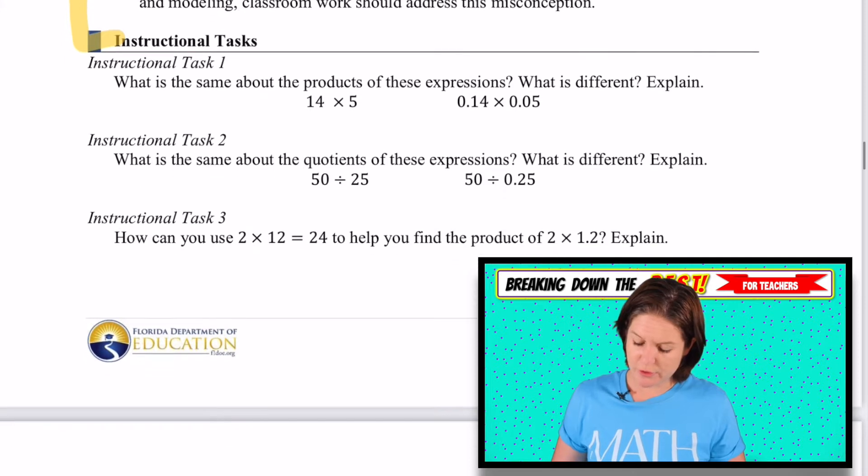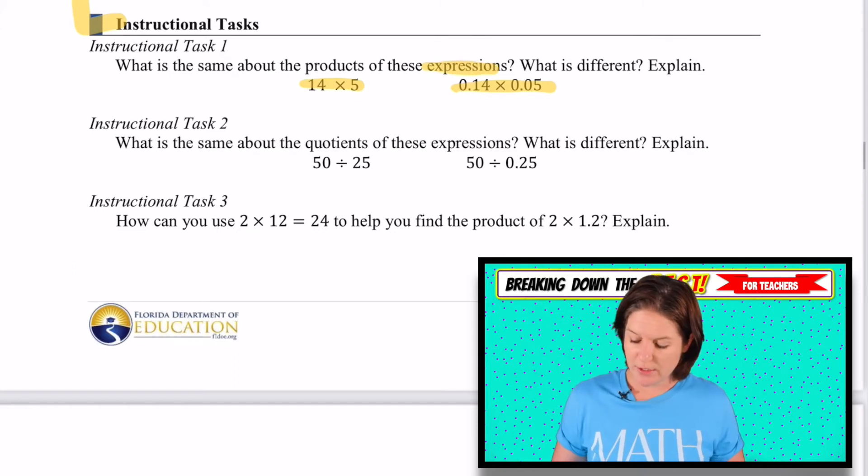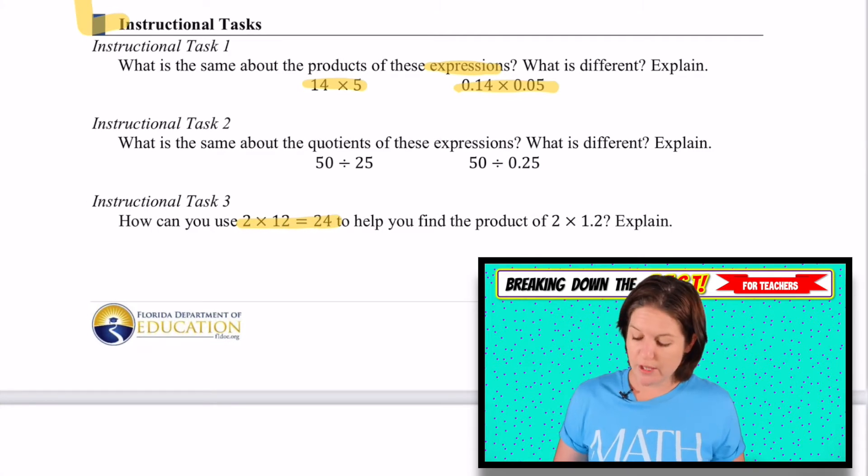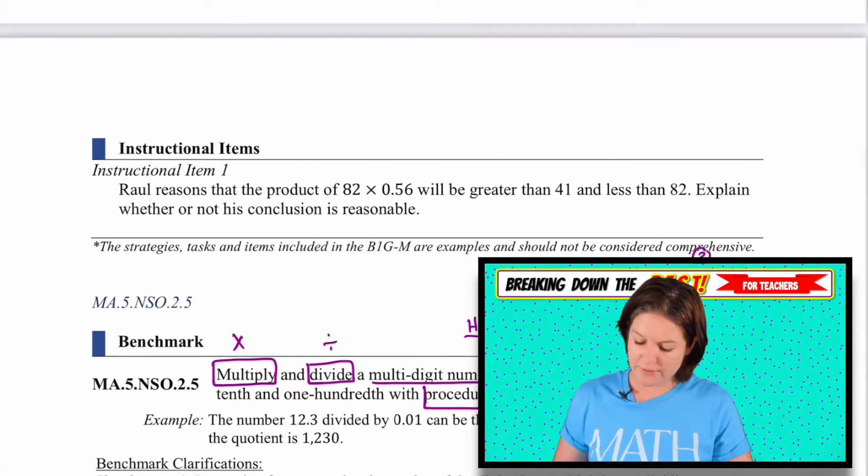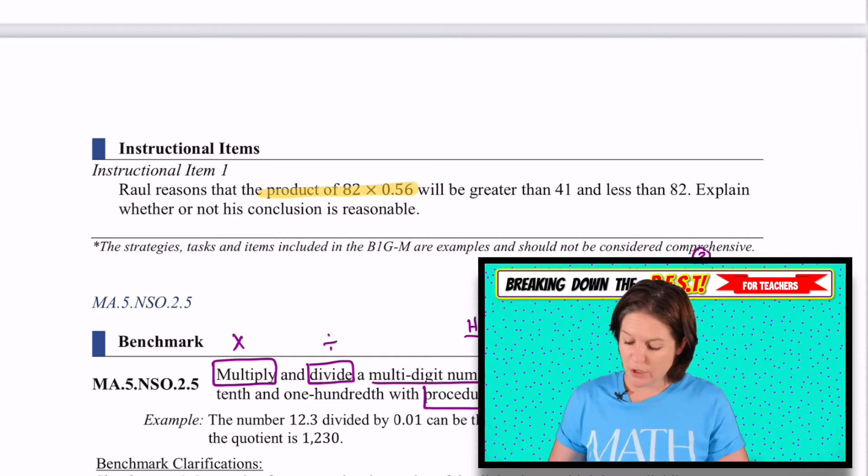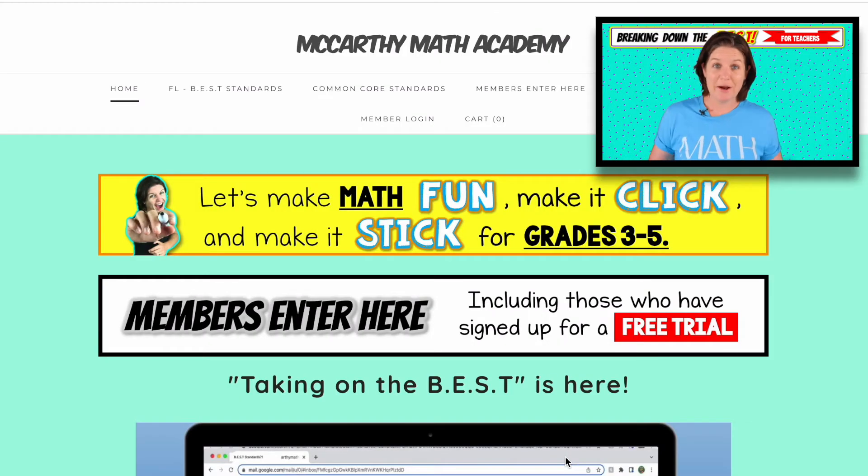These are some examples of instructional tasks. What's the same about these expressions? See, there's no equal sign present, they're expressions. What is different? Explain. How can you use the equation 2 times 12 equals 24 to help you find the product of 2 times 1.2? Raul reasons that the product of 82 and 0.56 will be greater than 41 and less than 82. Explain whether or not his conclusion is reasonable. So this is really about number sense.